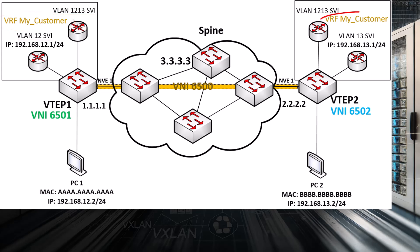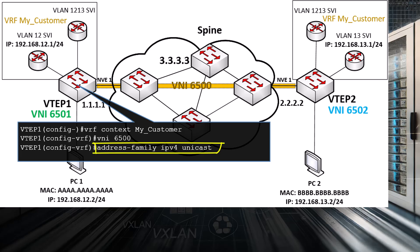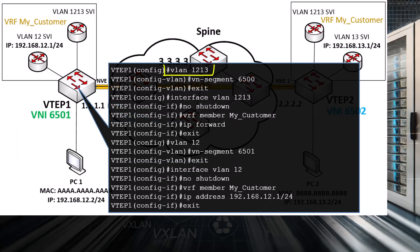We do something similar on VTEP2 as well. On VTEP1, we start by creating the VRF using the command 'vrf context myCustomer', and then we associate VNI 6500 — the transit VNI — with that VRF. We also indicate that this VRF will be forwarding IPv4 unicast traffic. Next, we configure VLAN 1213 as our transit VLAN and associate it with VNI 6500.